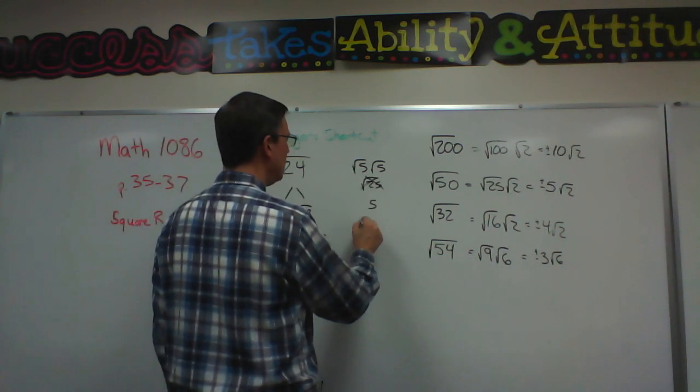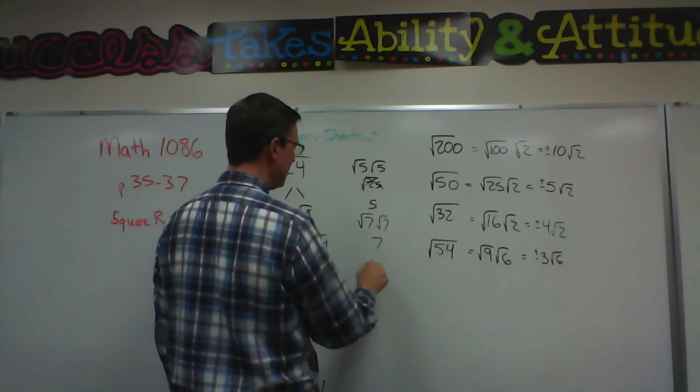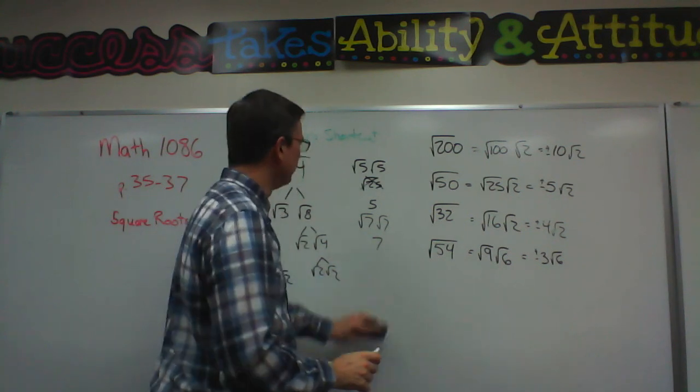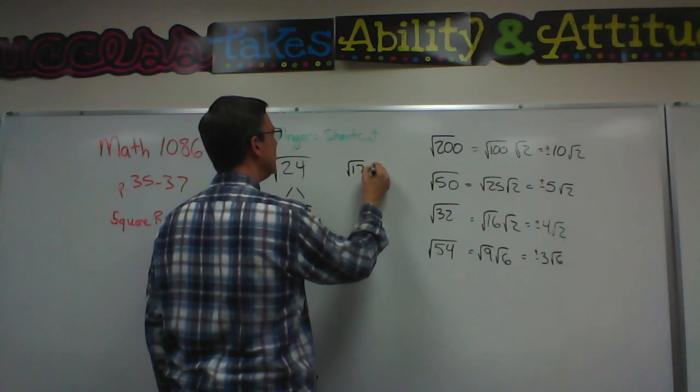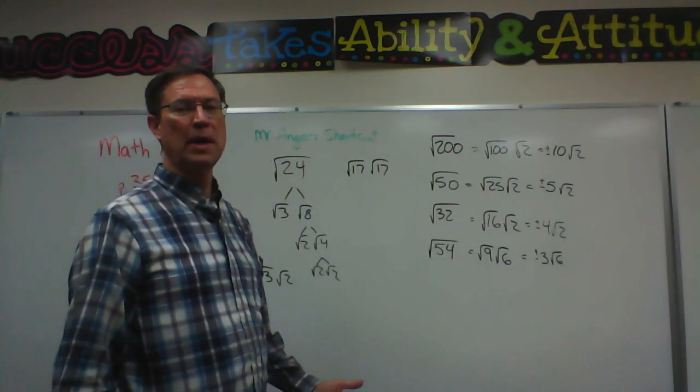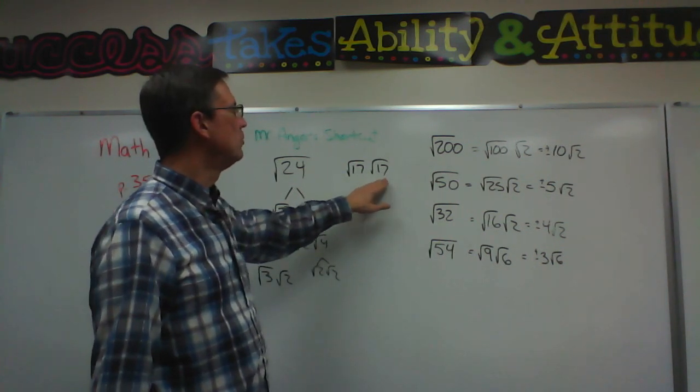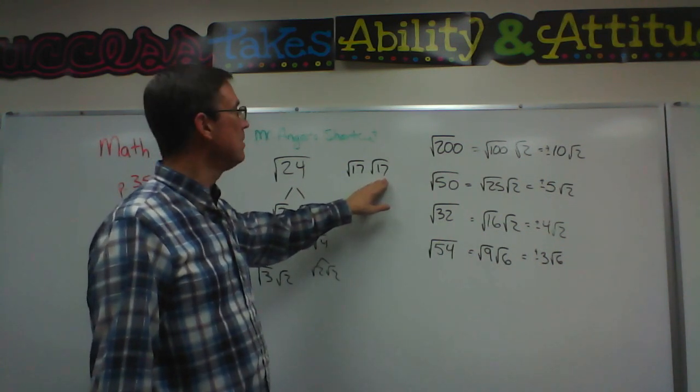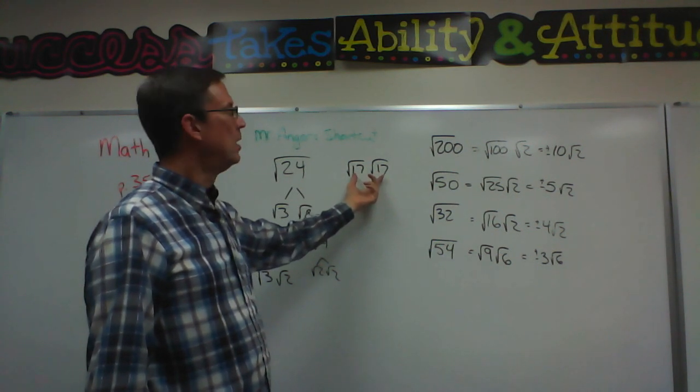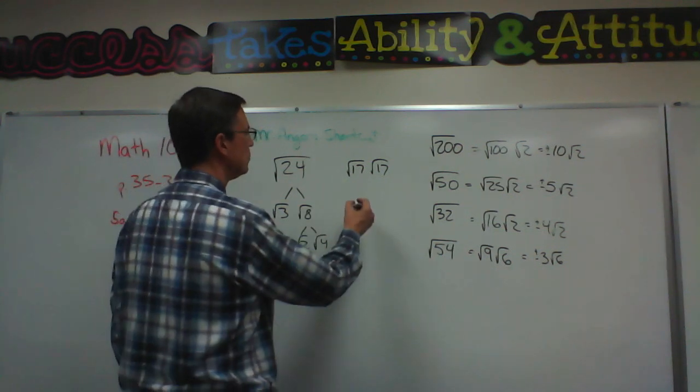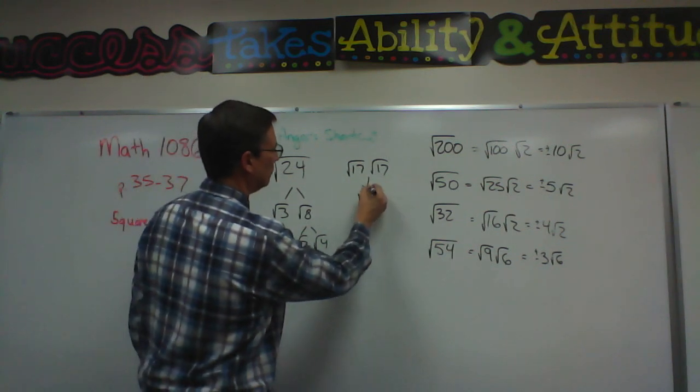Let's take a bigger number. Square root of 17 times the square root of 17. I don't need to multiply it out. Who cares what 17 times 17 is? The point is that because these two radicals are the same and I'm multiplying them together, the number that's under the radical pops out. And so this would just become 17.